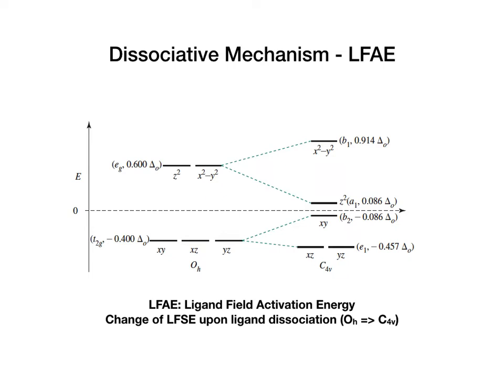As a result of this change in energy levels, the electron population will change, and consequently the ligand field stabilization energy will also change going from octahedral to C4V. There could be an energy penalty or an energy gain. Either way, this change in ligand field stabilization energy represents an electronic contribution to the activation barrier — in addition to bond breaking, electrostatics, and steric hindrance. We call this contribution the ligand field activation energy.